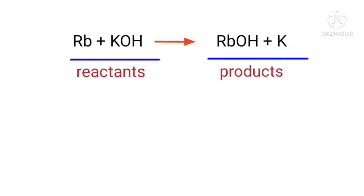In this equation, the reactants are rubidium and potassium hydroxide, and the products are rubidium hydroxide and potassium.